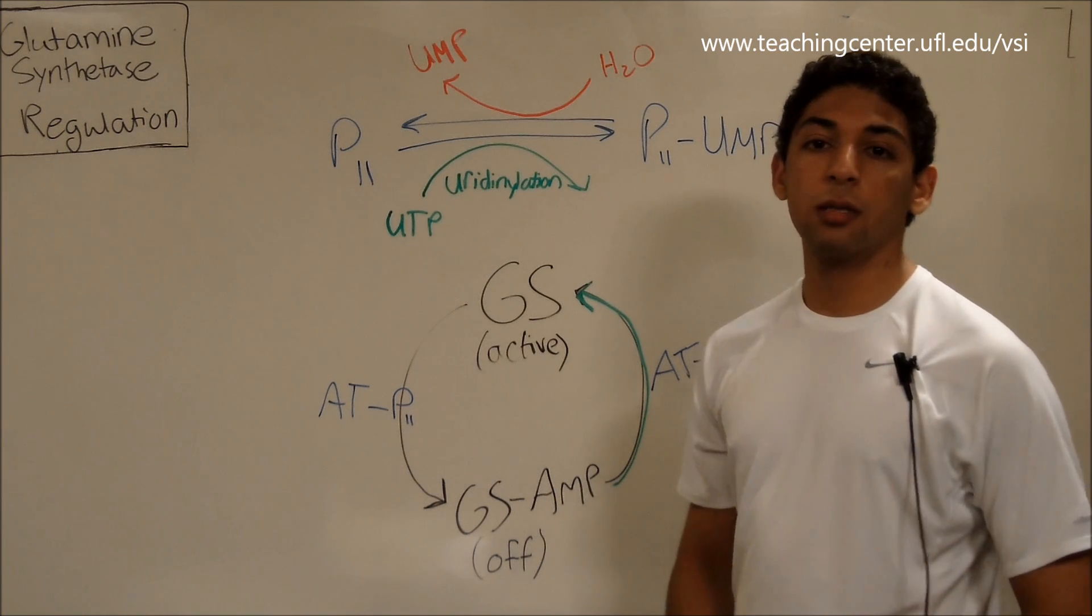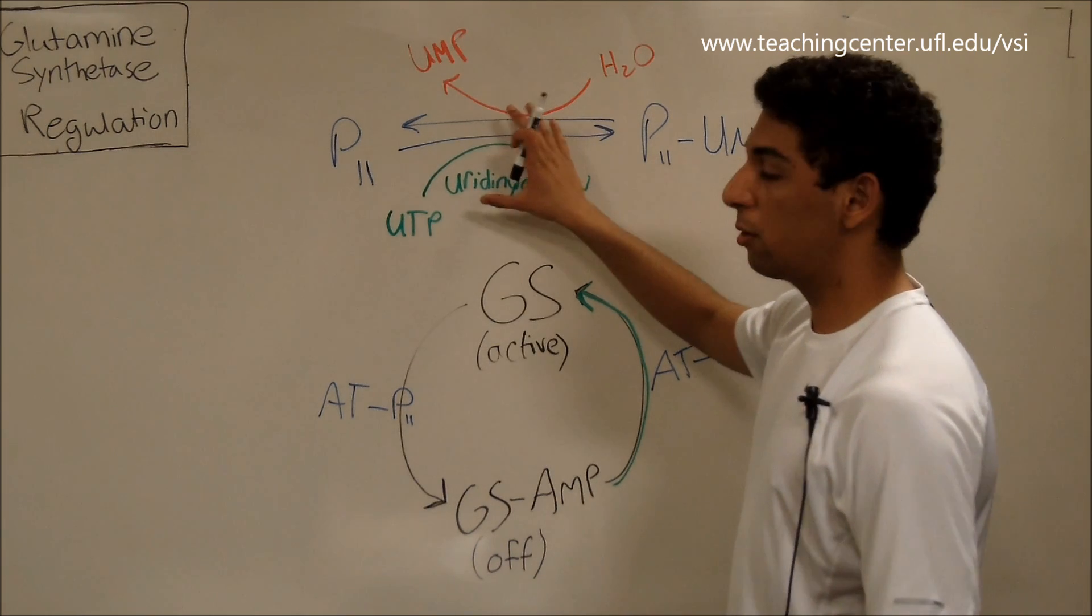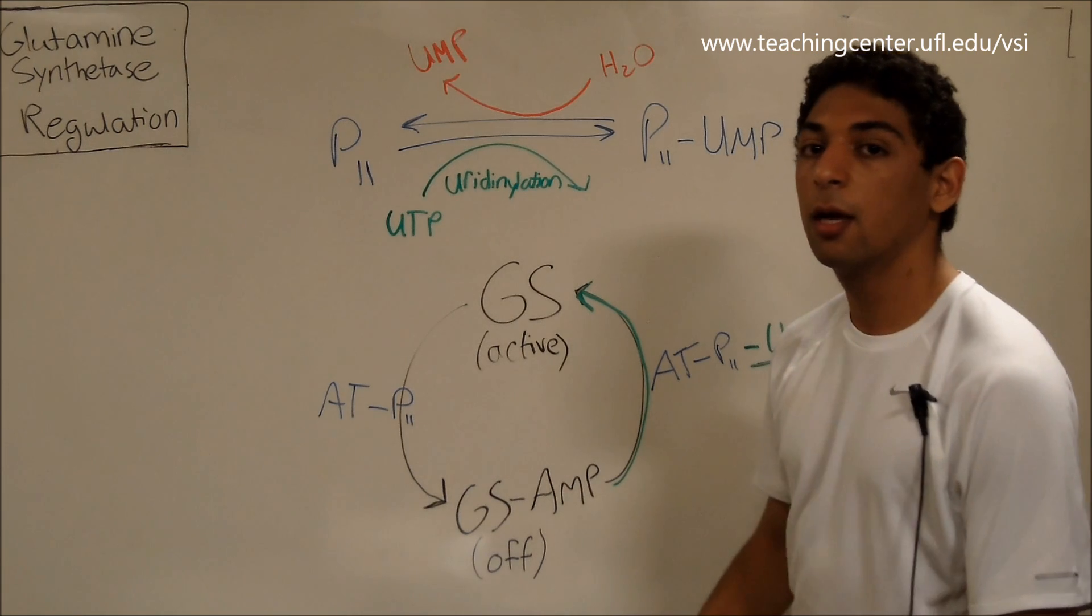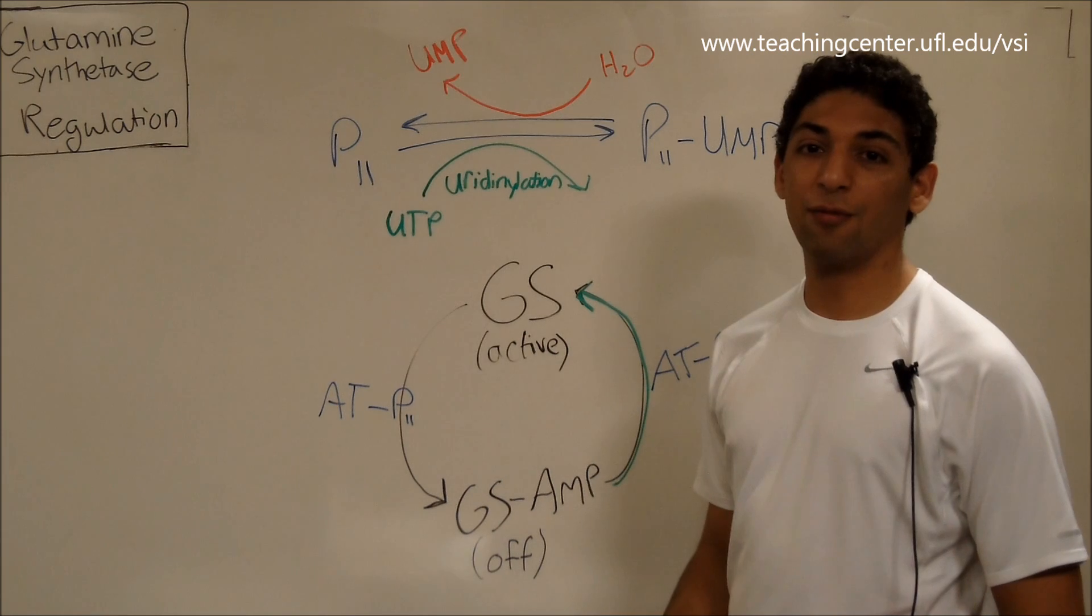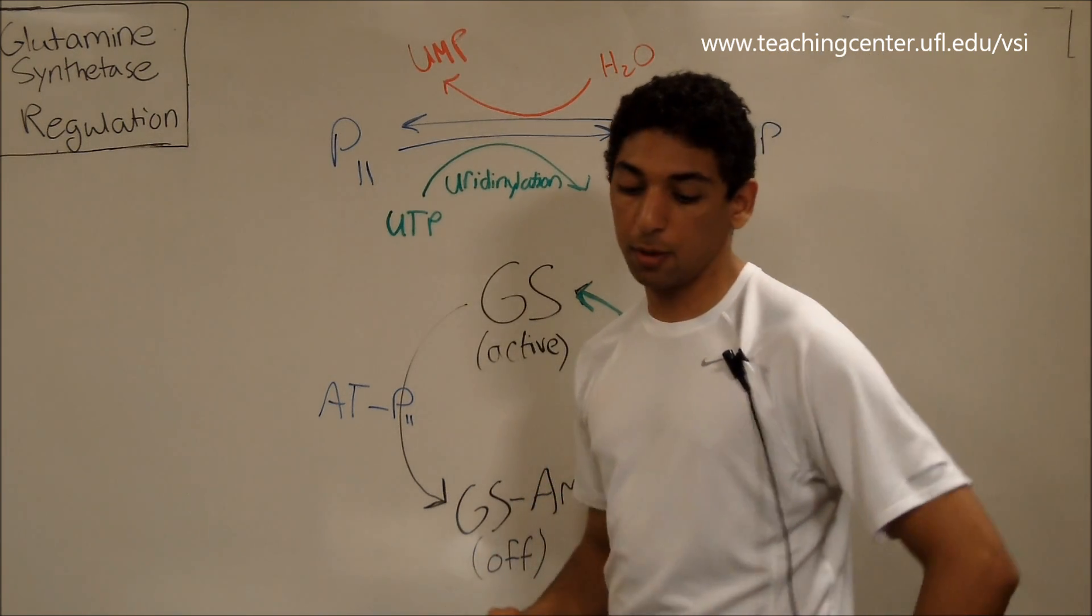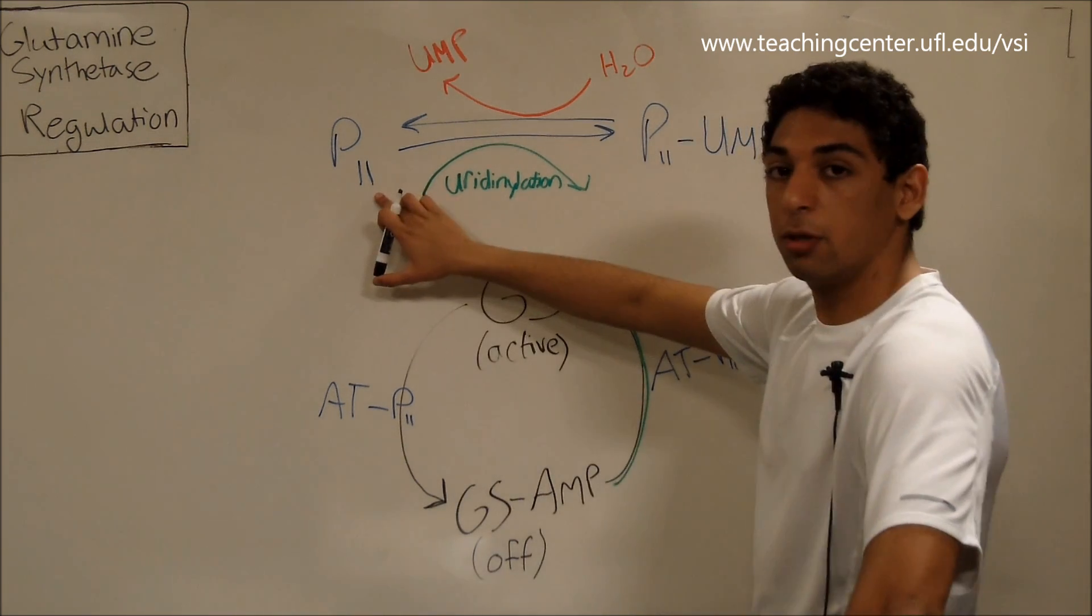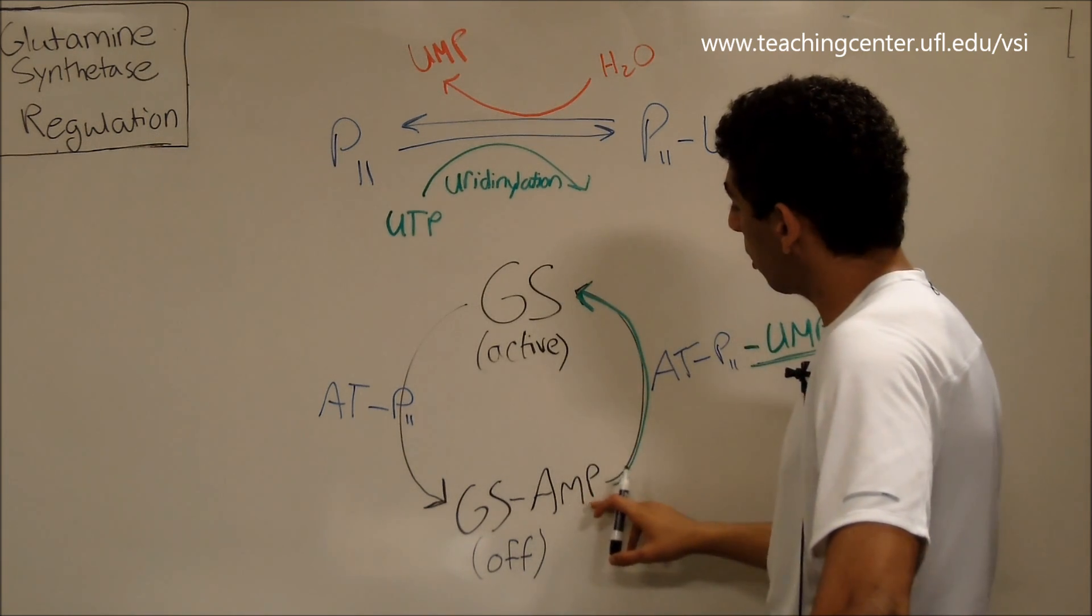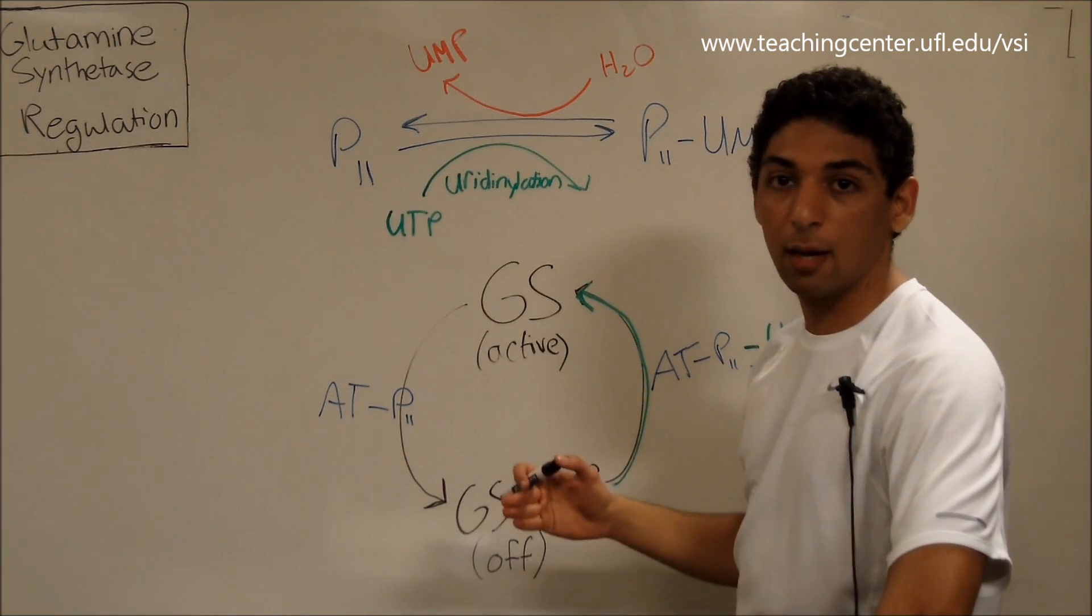So what makes this a tiny bit more complicated is because this pathway, even though it's a regulatory pathway on its own for these two enzymes or this one enzyme really, it's also regulated. So let's talk about that for a minute. And I know that kind of freaks you guys out, but let's talk about it for a minute and I think it'll become clear. So if we're going from P2 to P2 UMP, that means that we are turning glutamine synthetase on. Right? That means we're going to be making more glutamine.